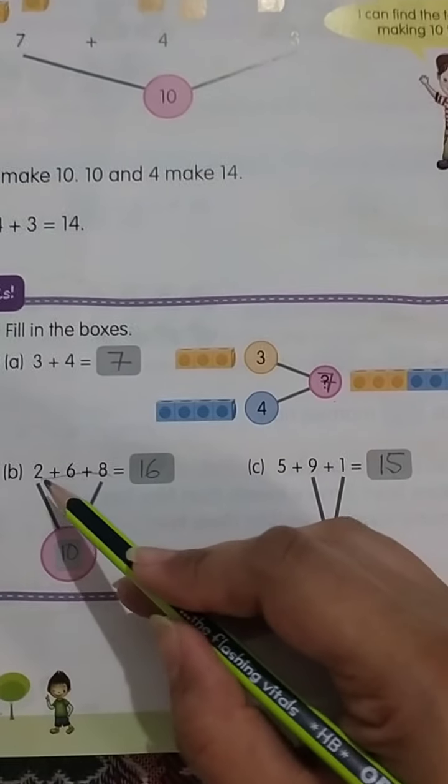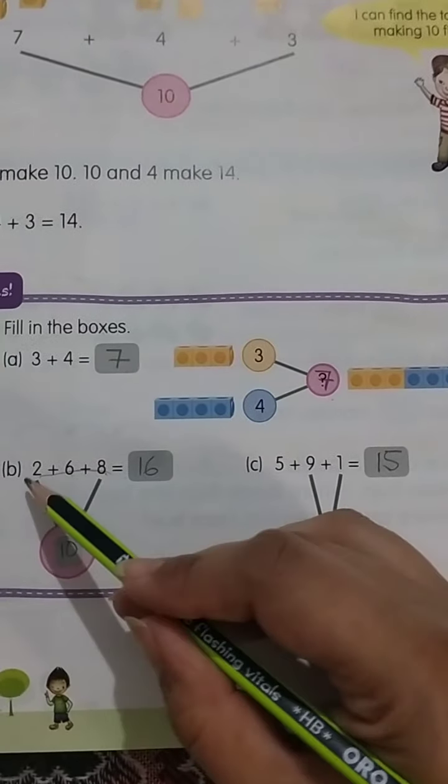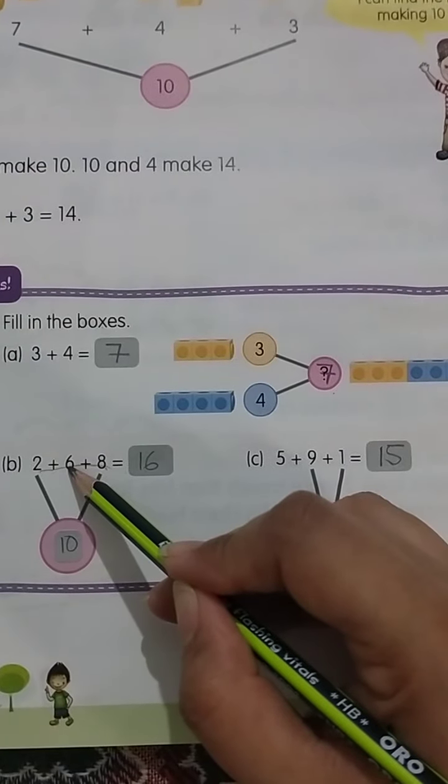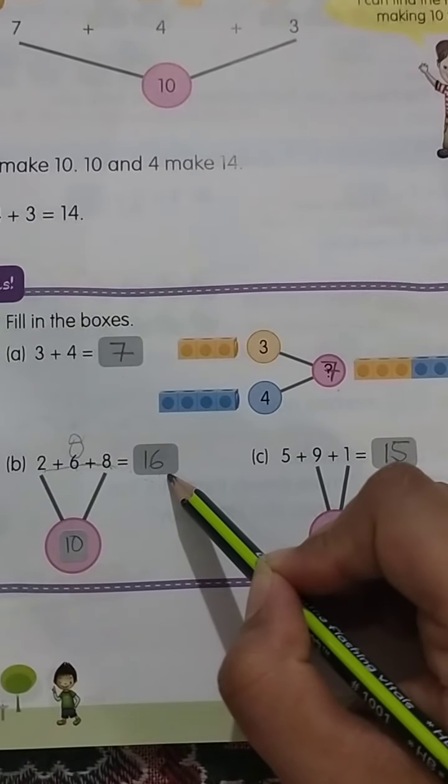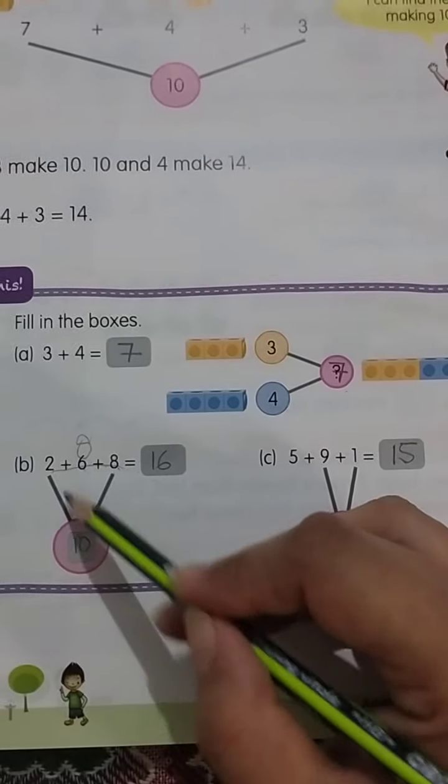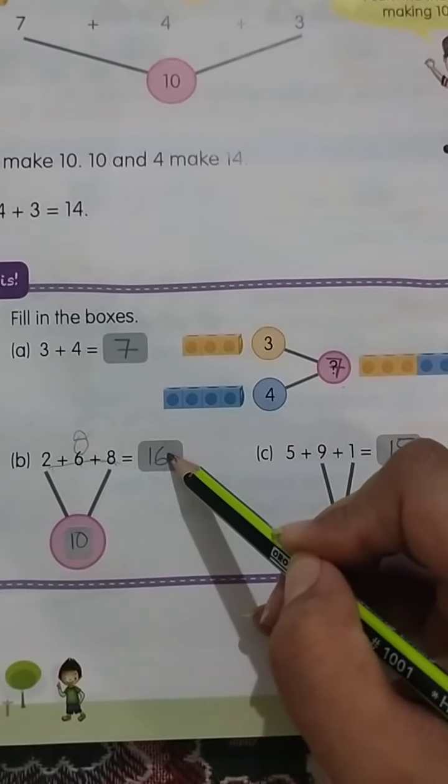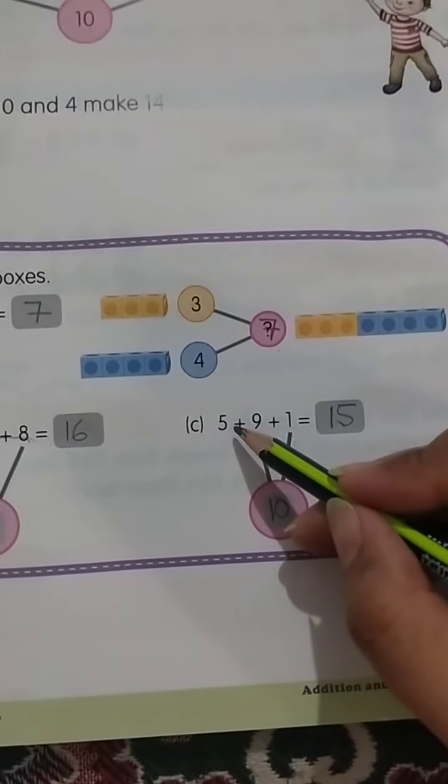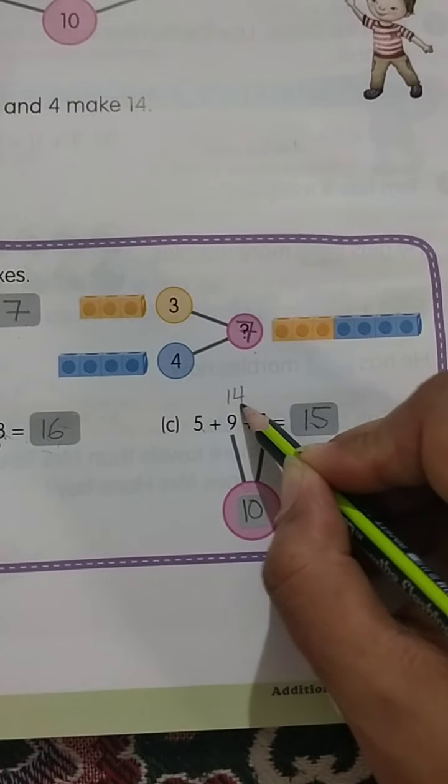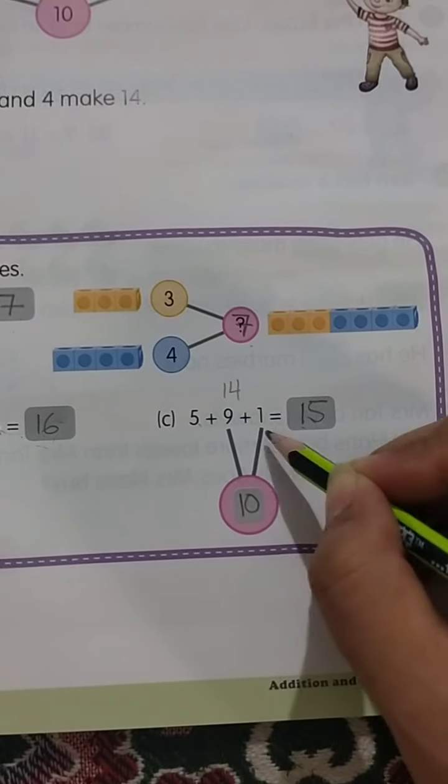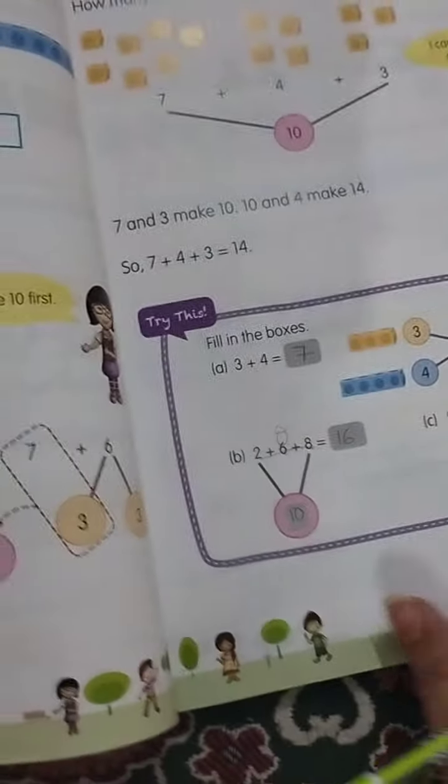2 plus 6, 8. 8 plus 8 is equal to 16. 2 کو 6 کے ساتھ آپ plus کریں گے تو یہاں answer آئے گا 8. 8 plus 8 کریں گے تو answer آئے گا 16. Here 8 اور 2 کو plus کریں تو یہاں اس کا answer آرہا ہے 10. 10 میں آپ نے 8 plus کیے ہیں تو یہاں answer آرہا ہے 16. اسی طرح 5 plus 9 is 14. 14 plus 1 is equal to 15. یہاں آپ نے 9 plus 1 is equal to 10. یہ addition ہے.